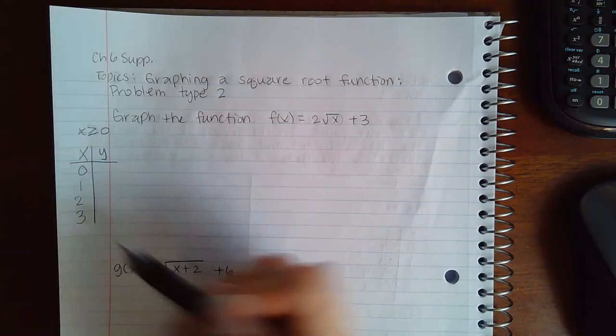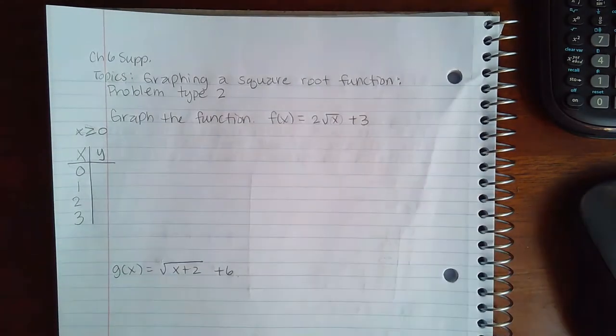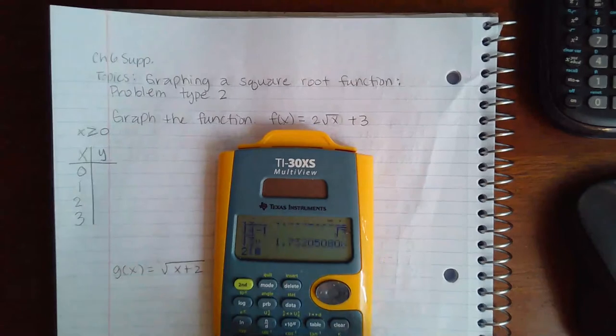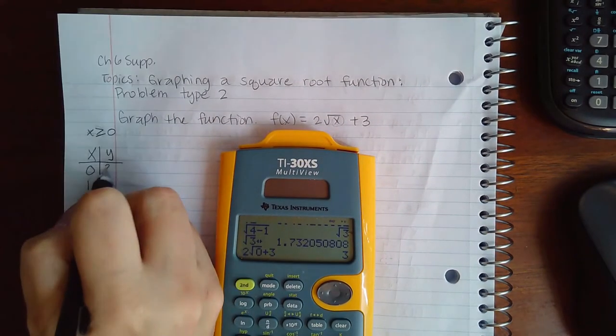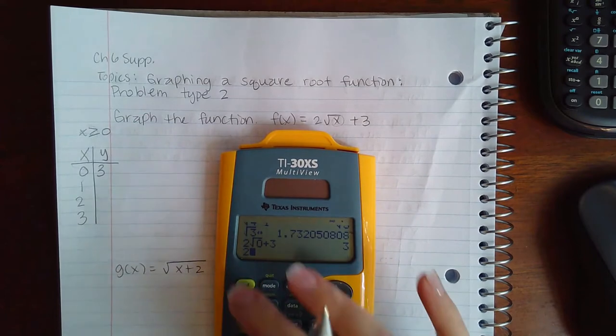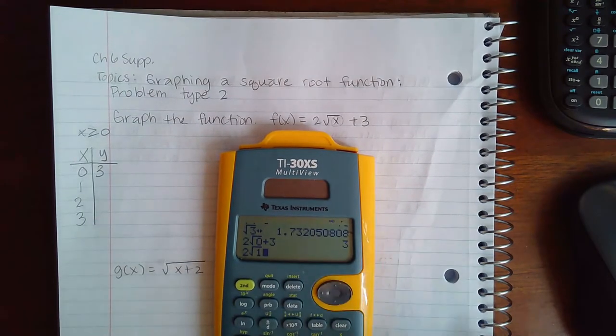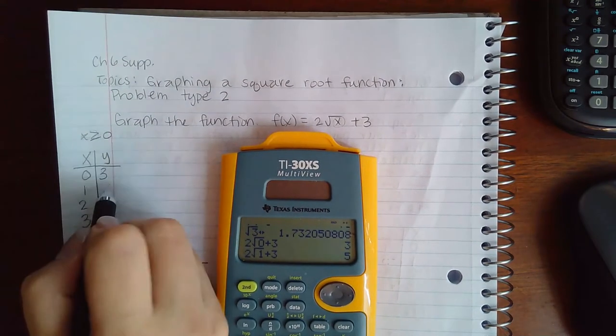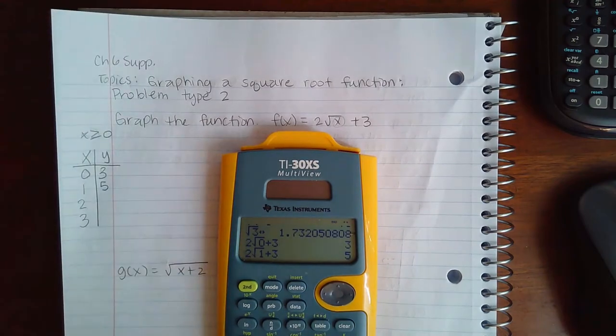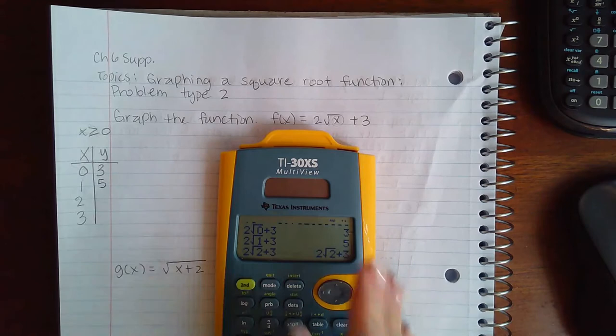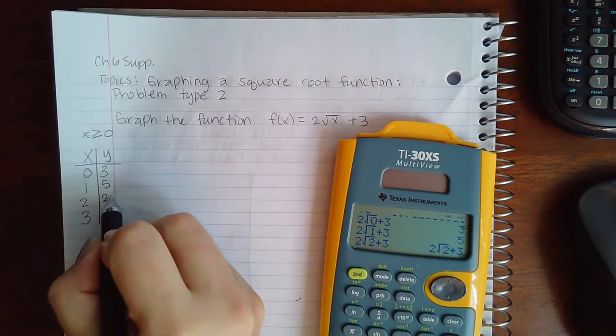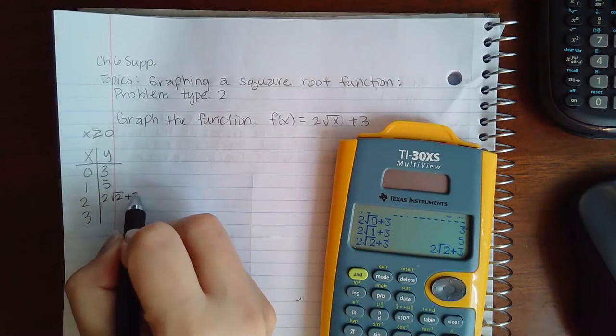and 3. Then I'm just going to plug them into that function. So 2 times the square root of 0 plus 3, I get 3. 2 times the square root of 1 plus 3, I get 5. 2 times the square root of 2 plus 3 stays looking like 2√2 + 3, but